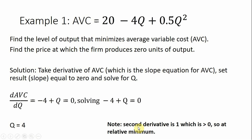I'm not going to talk too much about second derivatives or second order conditions, but just to verify this as a minimum: if we were to take the derivative of minus 4 plus q, we'd just get 1, and that's greater than 0, indicating we're at a relative minimum.